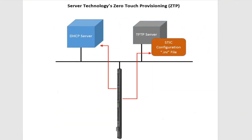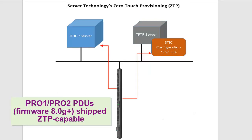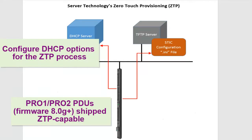This illustration shows the relationship of components in the Server Technology ZTP process. The Pro 1 and Pro 2 PDUs, firmware 80G or later, are shipped DHCP enabled and ZTP capable. The DHCP server is the heart of ZTP, configured with options to recognize the PDUs and reply with the location of the configuration file.